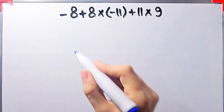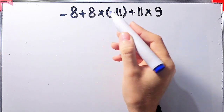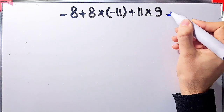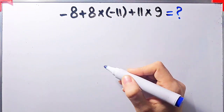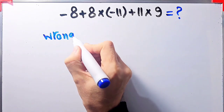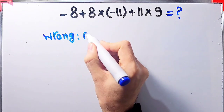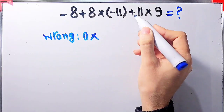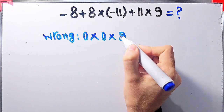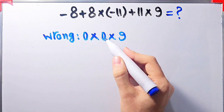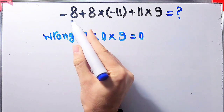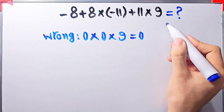In this question we have negative 8 plus 8 times negative 11 plus 11, then times 9. What is the answer? Some people start from the left: negative 8 plus 8 equals 0, then 0 times negative 11 plus 11 equals 0, then 0 times 9 equals 0. They say the final answer equals 0, but this answer is wrong.